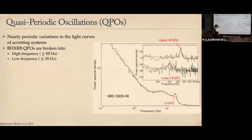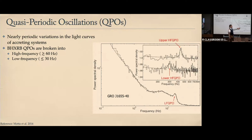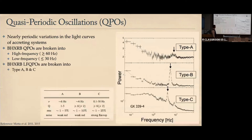In black hole X-ray binaries, QPOs are divided into two broad categories: high frequency, usually 100 Hz or above, and low frequency, which typically doesn't exceed about 30 Hz. There is a clear break in frequencies between the two. In one source we see both simultaneously: two high-frequency QPOs at about 300 Hz and 450 Hz, and a low-frequency QPO just above 10 Hz. I'm going to be focusing on the low-frequency QPOs.